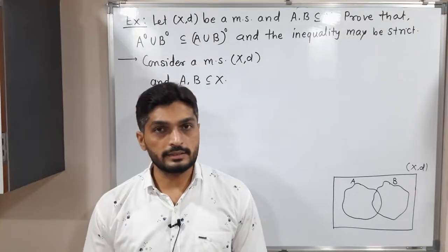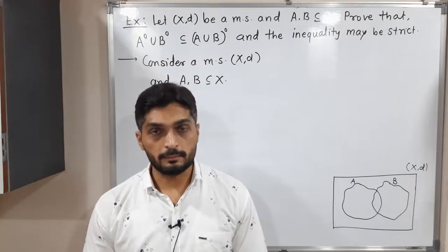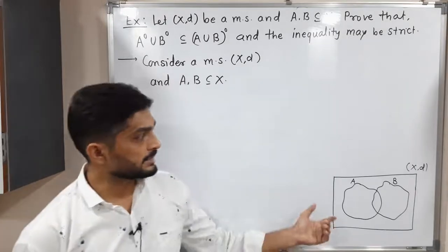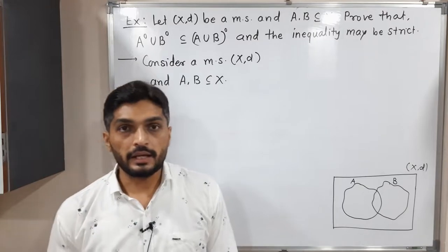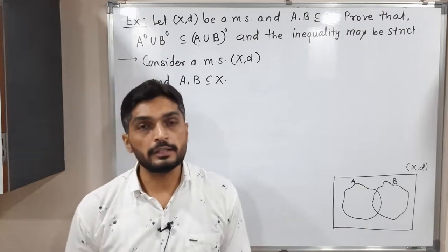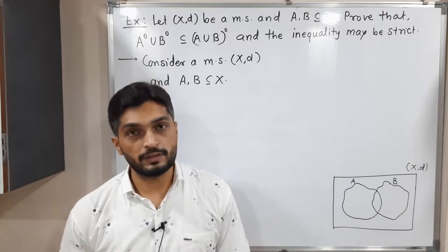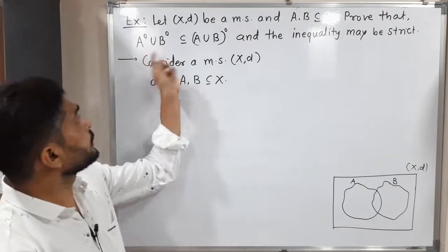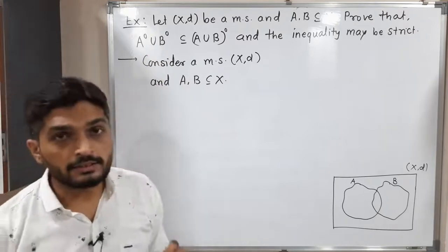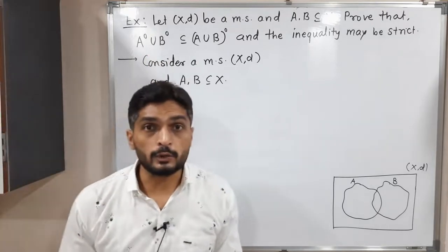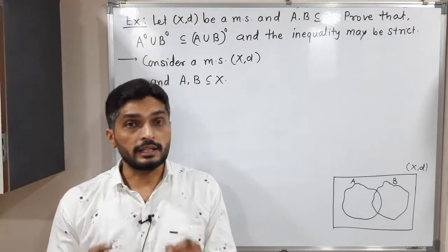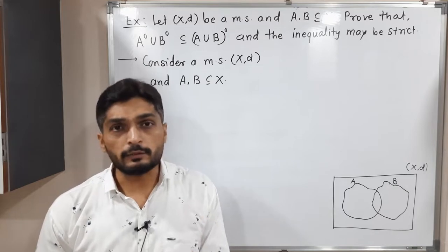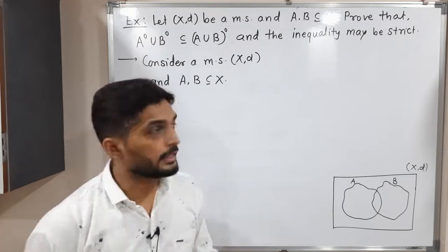Let us discuss this result. We have a metric space X with subsets A and B. We have to prove that the interior of A union the interior of B is a subset of the interior of A union B.